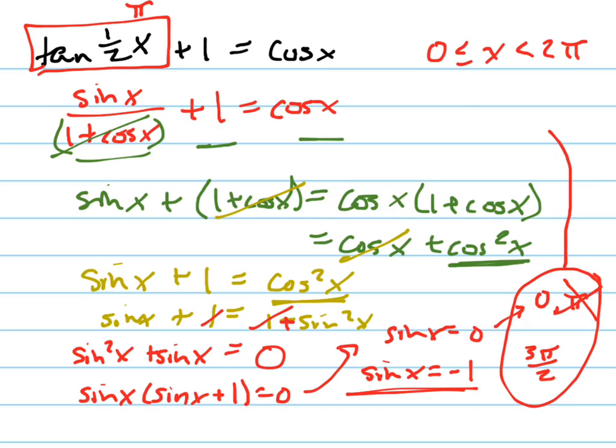Now let's check 3π/2. 3π/2 times one half is 3π/4. The tangent of 3π/4 is 1. Is that right?